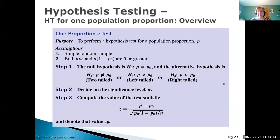The method is the same as for means: we have our purpose, we're performing a hypothesis test, we have some assumptions — independent and simple random samples always hold — and then we have our large enough number condition: NP and NQ both greater than or equal to 5. Note that for confidence intervals it was 10, but here we have 5.